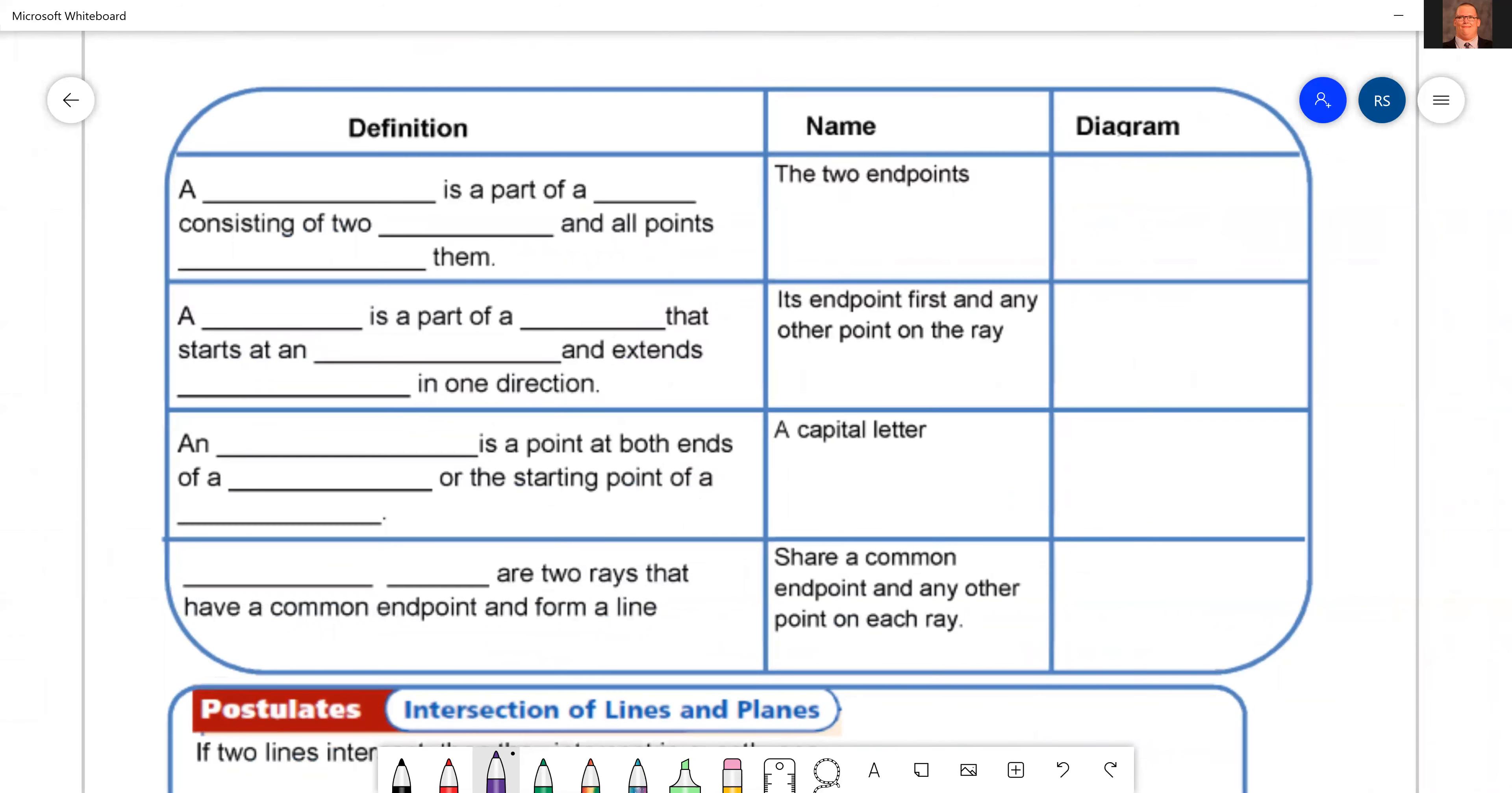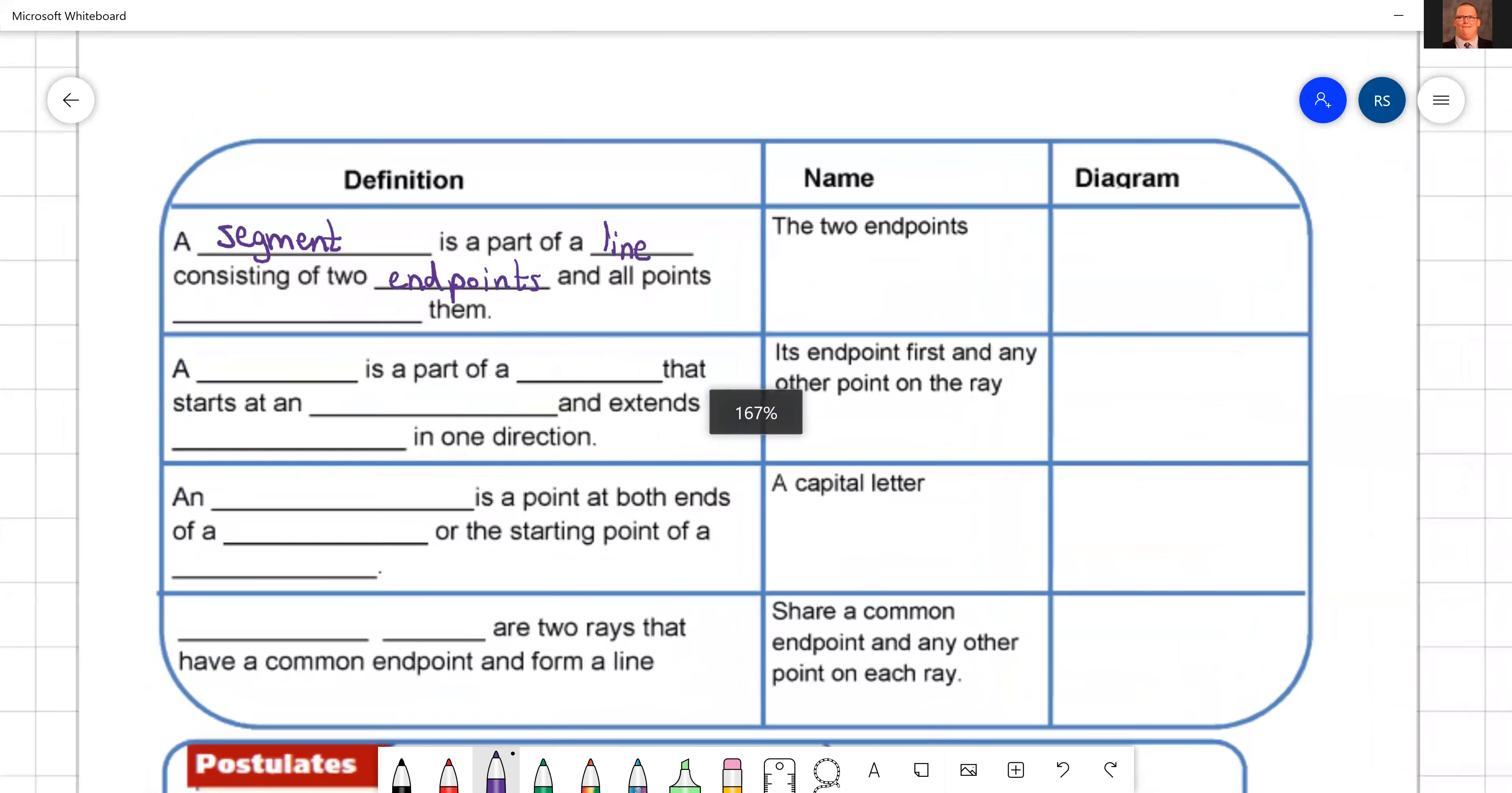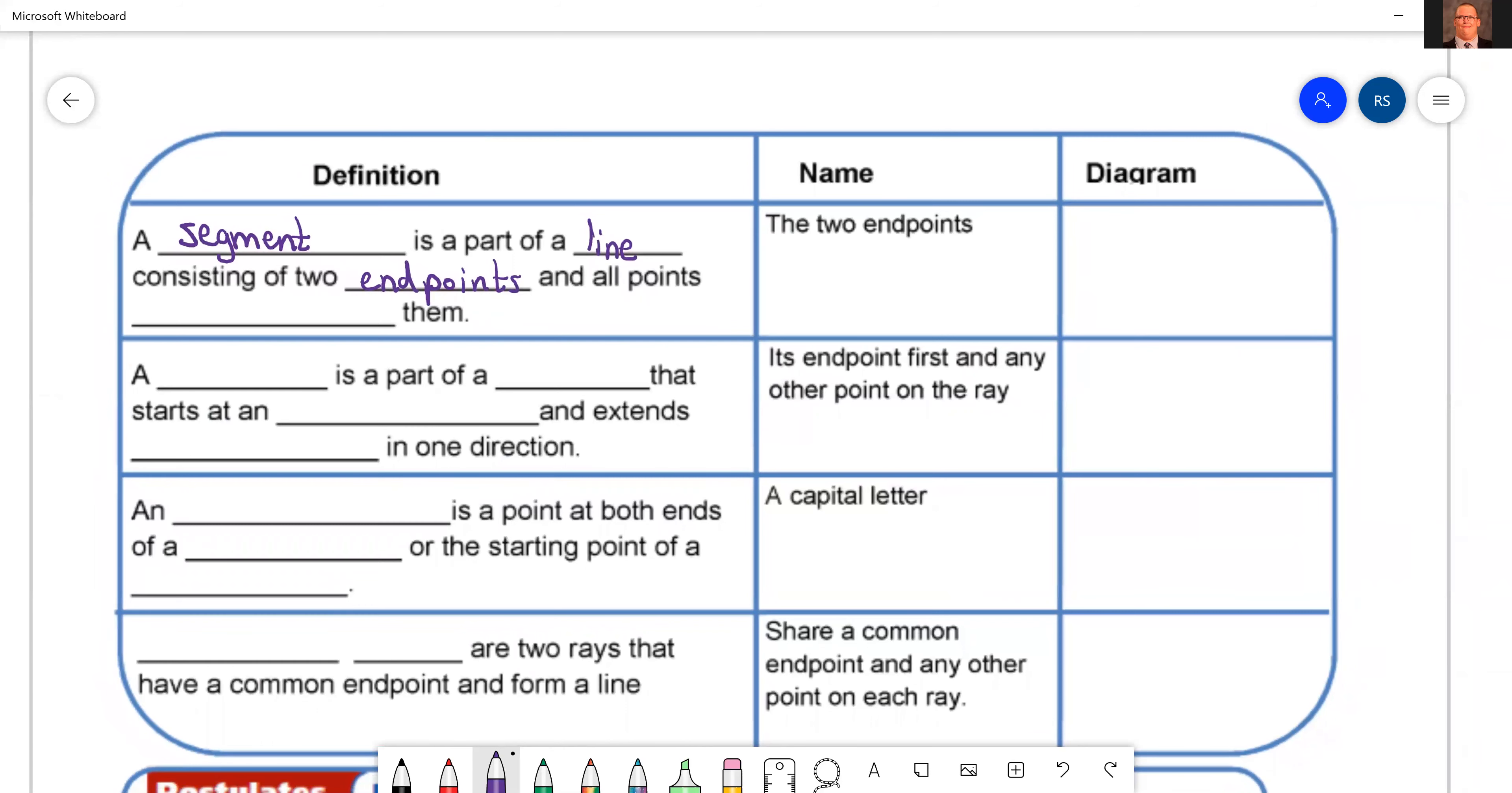And we've got some more definitions. Lovely. Okay, so first one we're going to look at is a segment. A segment is a part of a line consisting of two endpoints and all the points between them. Don't zoom out on me, I'm not done with you. All points between them.